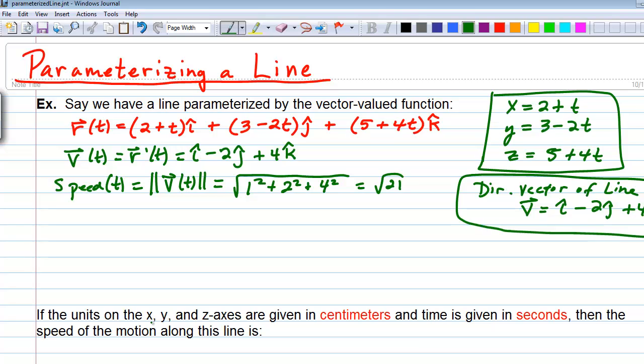If the units, as we can see at the bottom here, on the x, y, and z axes are given in centimeters, and the time is given in seconds, then the speed of the motion along this line would be the square root of 21 centimeters per second. And so that's sort of an interesting piece of information. It has to do with the magnitude of the velocity vector when it's a constant, like it is here, constant speed.